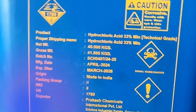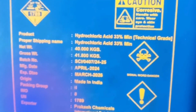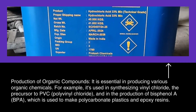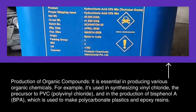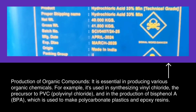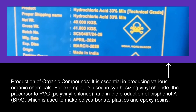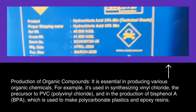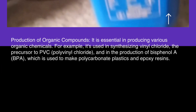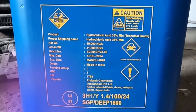Production of Organic Compounds: HCl is essential in producing various organic chemicals. For example, it is used in synthesizing vinyl chloride, the precursor to PVC (polyvinyl chloride), and in the production of bisphenol A (BPA), which is used to make polycarbonate plastics and epoxy resins.